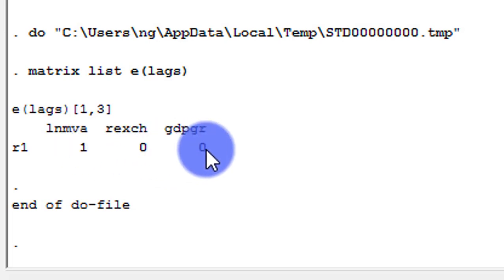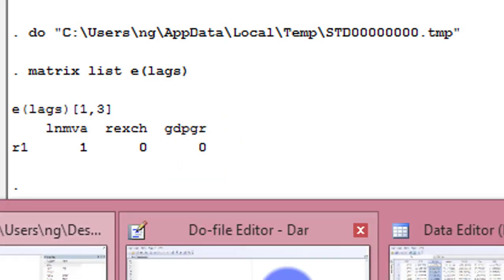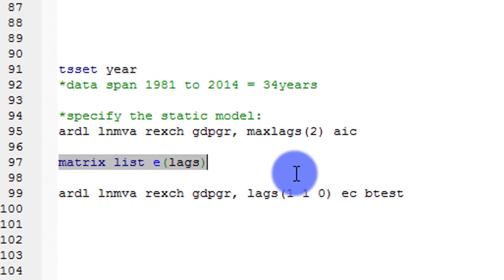It is these optimal lags that I will input into the error correction module for me to be able to perform the bounds test in Stata. So that is the procedure. So now, I have specified my error correction equation. And you can see that for the lags now, I have indicated the optimal lags as chosen by AIC.